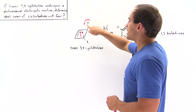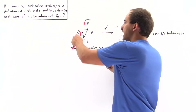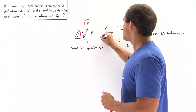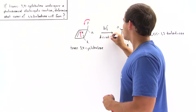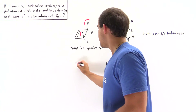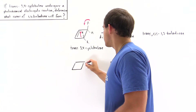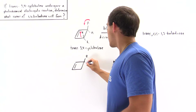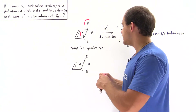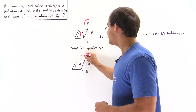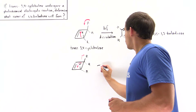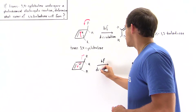Now for the second type of disrotation: this end rotates into the board (clockwise) and the other end rotates out of the board (counter-clockwise). Let's redraw trans-3,4-cyclobutene with the same stereochemistry — R pointing up, H pointing down on one carbon, H pointing up and R pointing down on the other. We apply the light source hν, and this is also a disrotation.